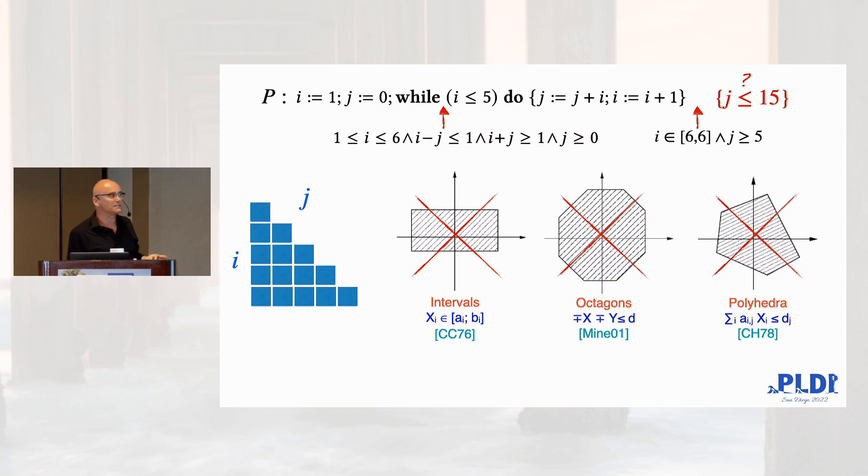The invariant is here and the postcondition is here. Then you can refine the domain and go to octagons. That's pretty nice. You get better results. J is bigger than five, but still, you don't have the answer. And if you keep going with polyhedra, you won't get the answer.